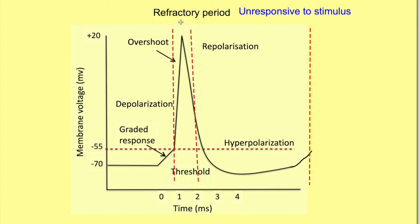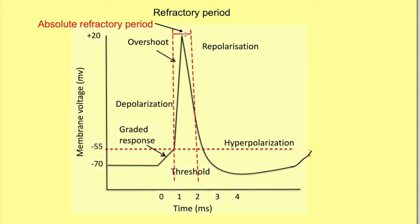Let's look at the refractory period. The term refractory means that the excitable cell becomes unresponsive to a stimulus. There are two types: absolute refractory period starts from the beginning of the action potential until about two-thirds of the repolarization phase is finished. During this absolute refractory period, if another stimulus comes while the action potential is going on, there will not be any new action potential — it is absolutely refractory and does not respond to any stimulus.